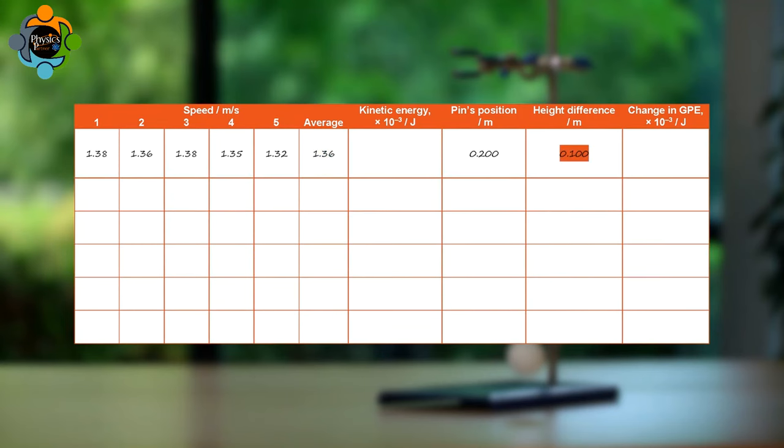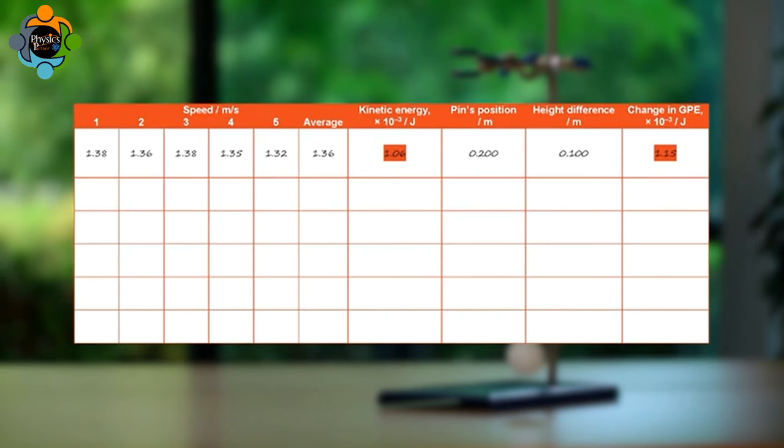The average speed is then calculated for each case. The kinetic energy is calculated using the equation KE = ½mv². The change in gravitational potential energy is calculated using the equation GPE = mgh.